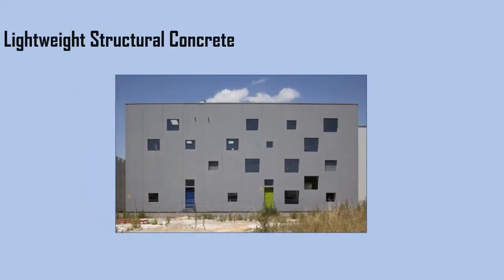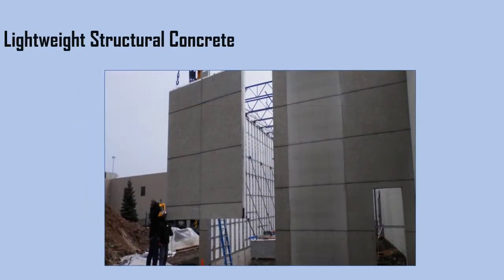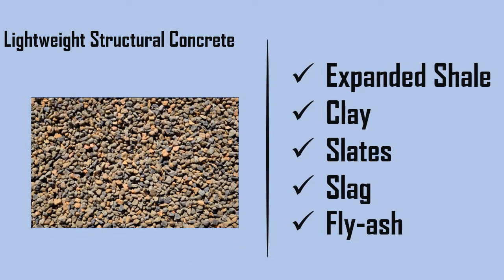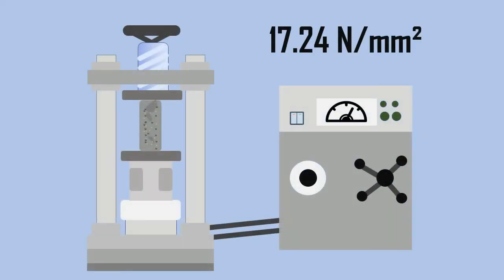Lightweight concretes can also be used for structural applications with strengths equivalent to normal weight concrete. These are generally made with expanded shale, clay, slates, slag, and fly ash. The minimum compressive strength would be 17.24 newton per millimeters square.